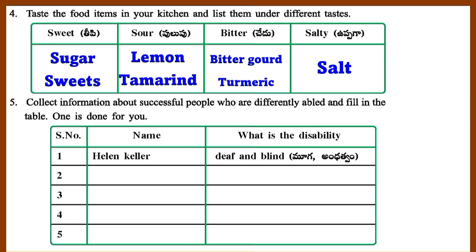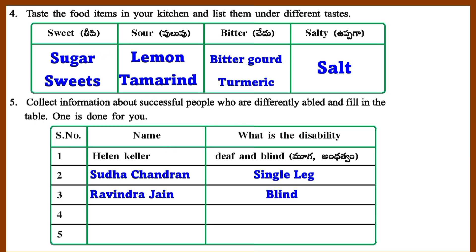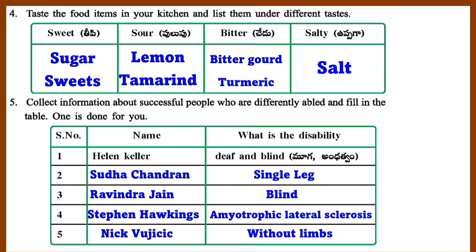Question 5: Collect information about successful people who are differently abled and fill in the table. 1. Helen Keller — Deaf and blind. 2. Sudha Chandran — Single leg. 3. Ravindra Jain — Blind. 4. Stephen Hawking — Amyotrophic lateral sclerosis. 5. Nick Vujicic — Without limbs.